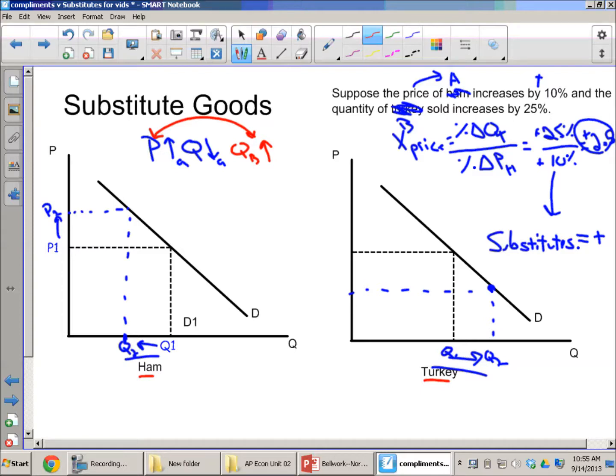So again, when you see that the relationship between the price of one good and the quantity of the other is going in the same direction, that tells you that those two goods are substitutes. And that's the reason why.